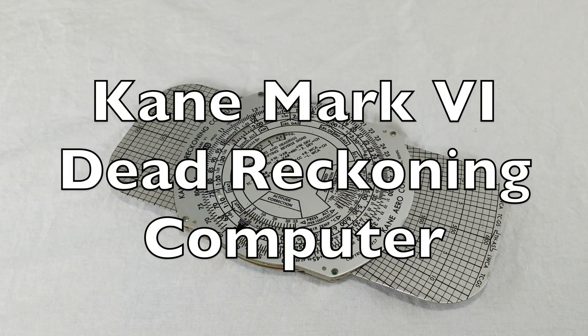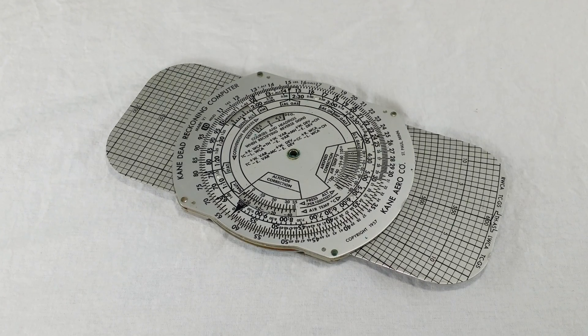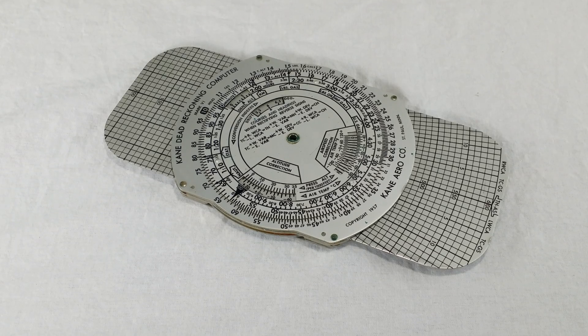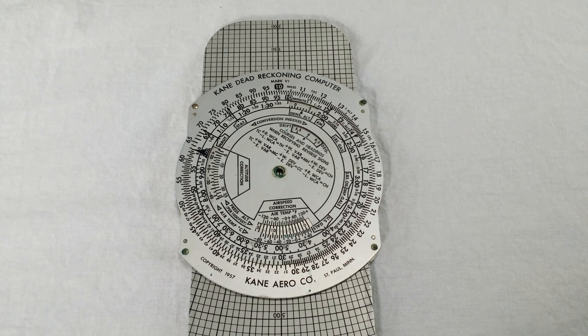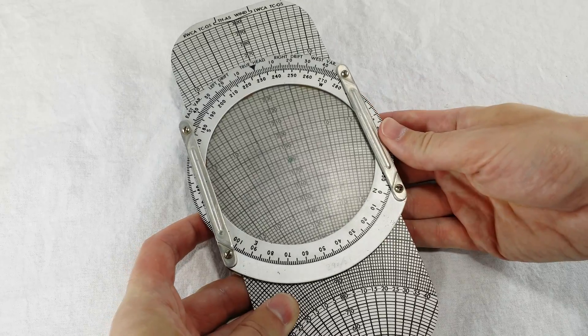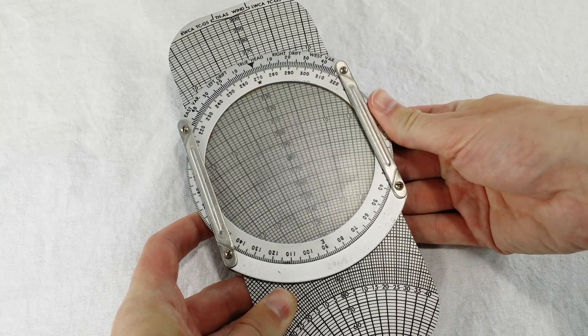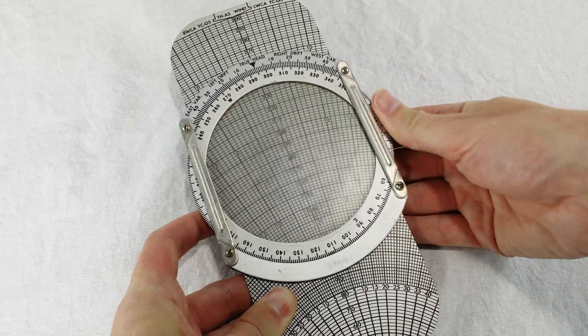This is the Kane Mark VI Dead Reckoning Computer from 1958. It's got tons of stuff. The backside has a sliding round thing over a polar coordinate grid. You can also spin this ring here.